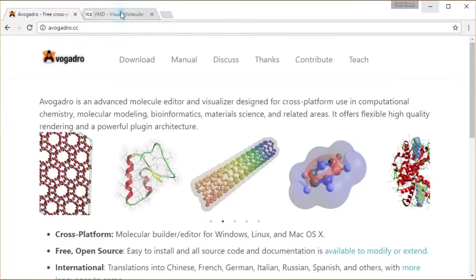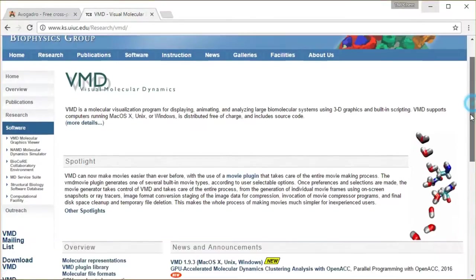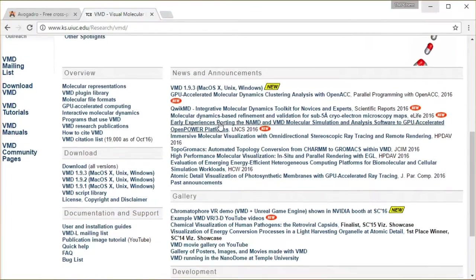Then VMD we have from the Theoretical and Computational Biophysics group at the University of Illinois at ks.uiuc.edu/research/vmd. You can go and download whatever is the most recent version for your relevant platform, whether you're on Windows, Mac, or something else.